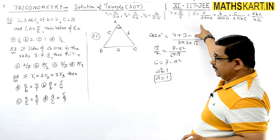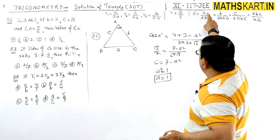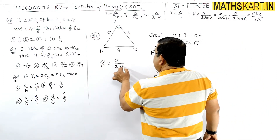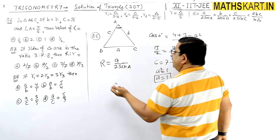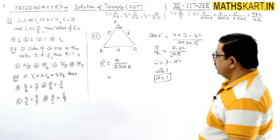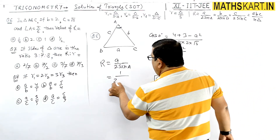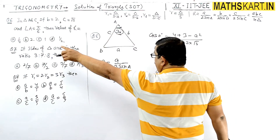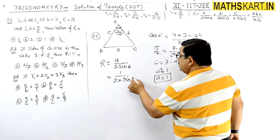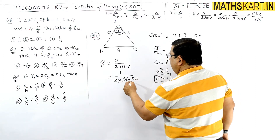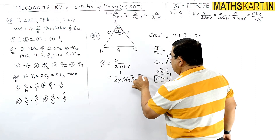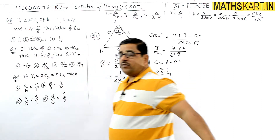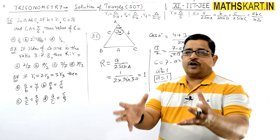Ab is formula में use करते हैं: R = a / 2sinA. We know cos A and can find sin A. With a=1 and angle A = π/6, that is sin 30°, so R = 1 / (2 × sin30°) = 1 / (2 × 1/2) = 1. Answer is 1, option C is correct.